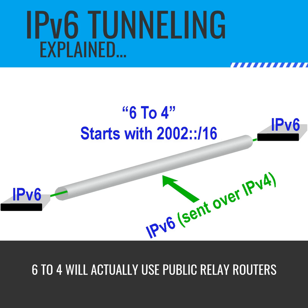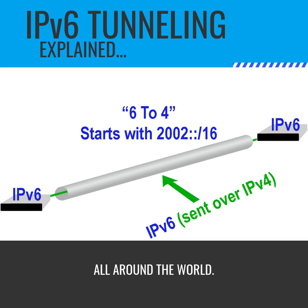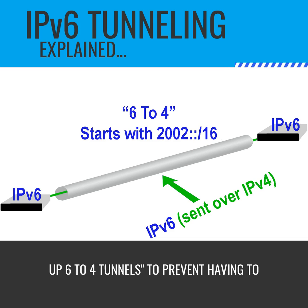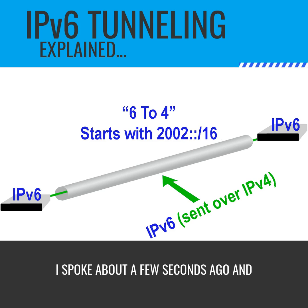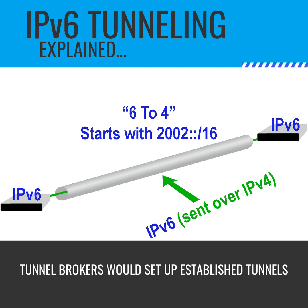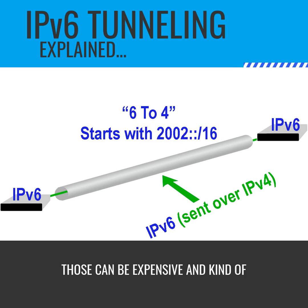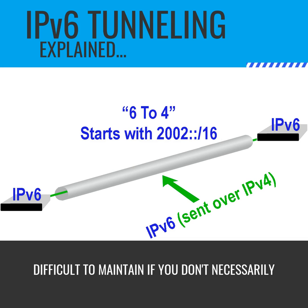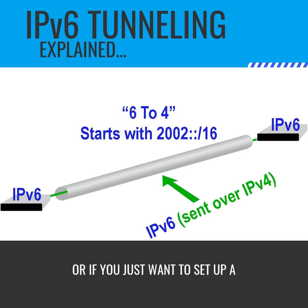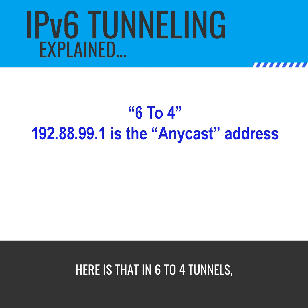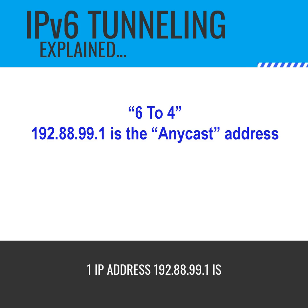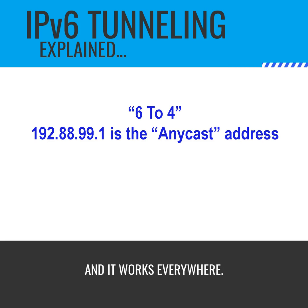6to4 will actually use public relay routers all around the world. You can search online for how to set up 6to4 tunnels to prevent having to use tunnel brokers — those can be expensive and difficult to maintain if you don't necessarily need them all the time. In 6to4 tunnels, one IP address — 192.88.99.1 — is known as an Anycast address, and it works everywhere.